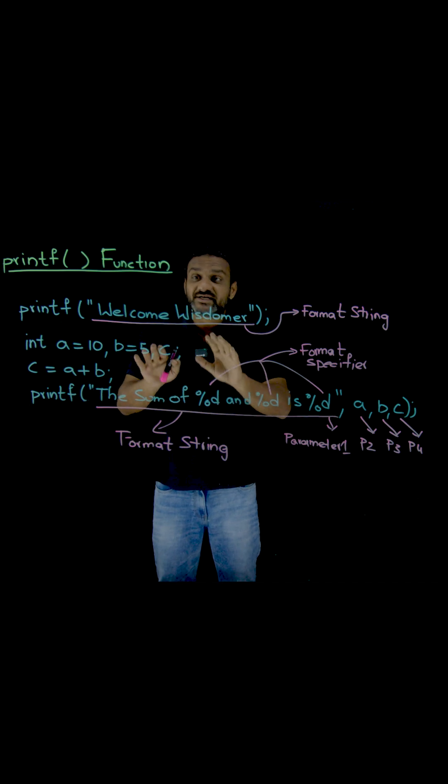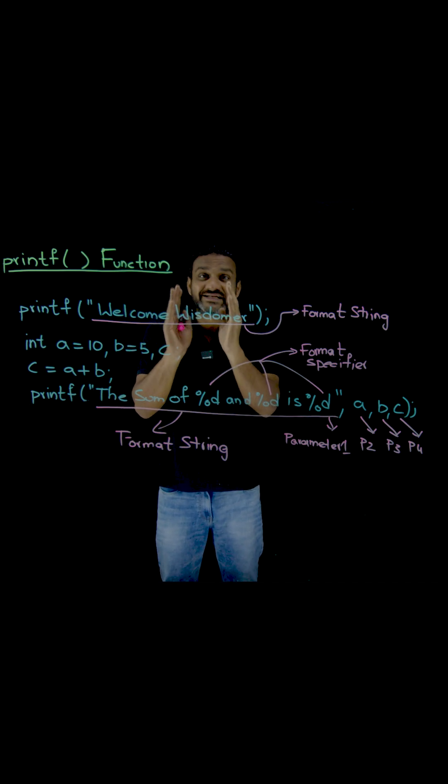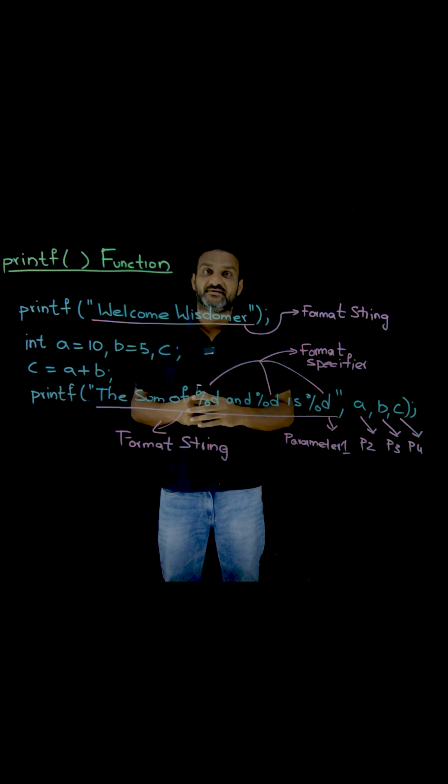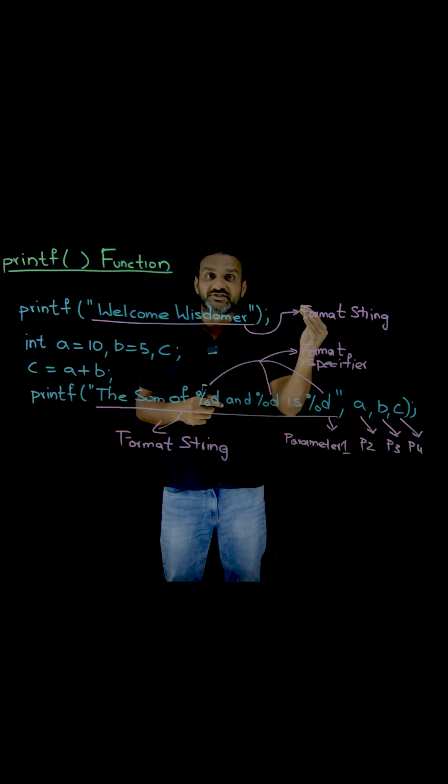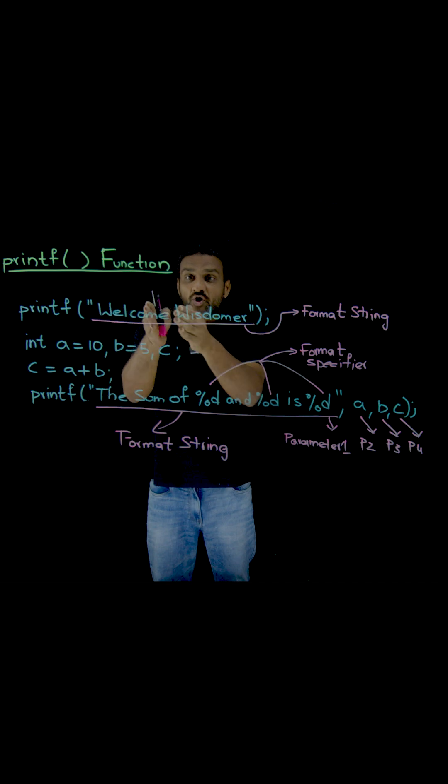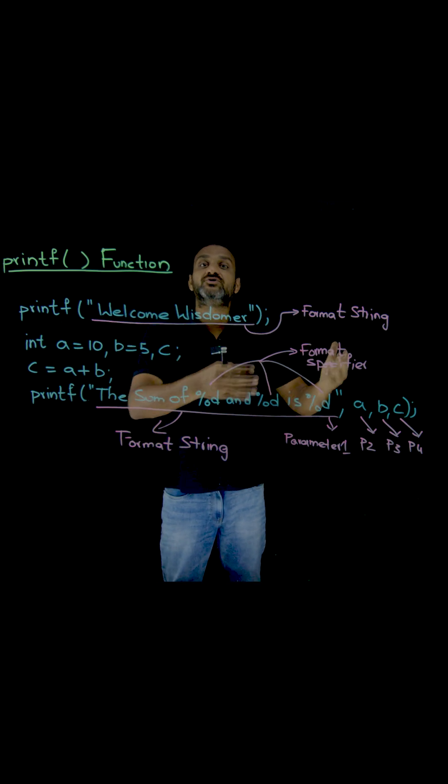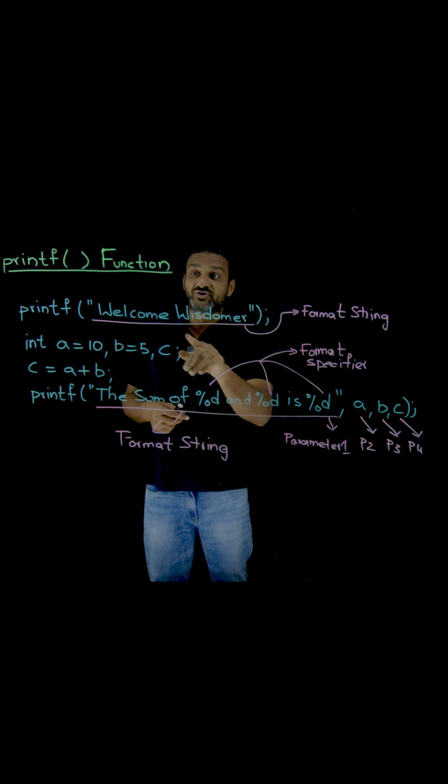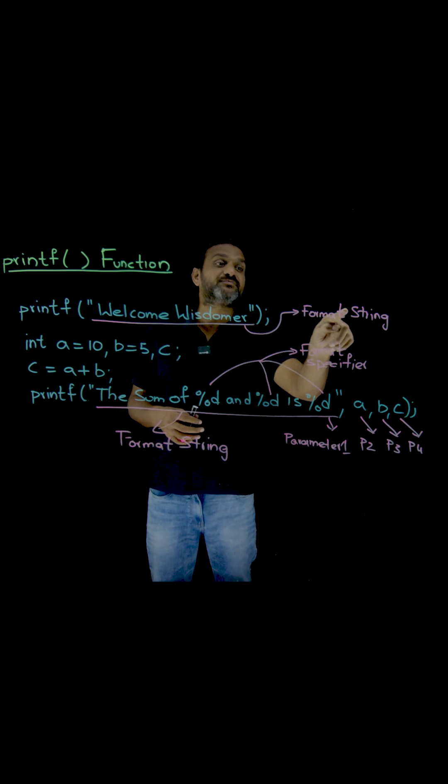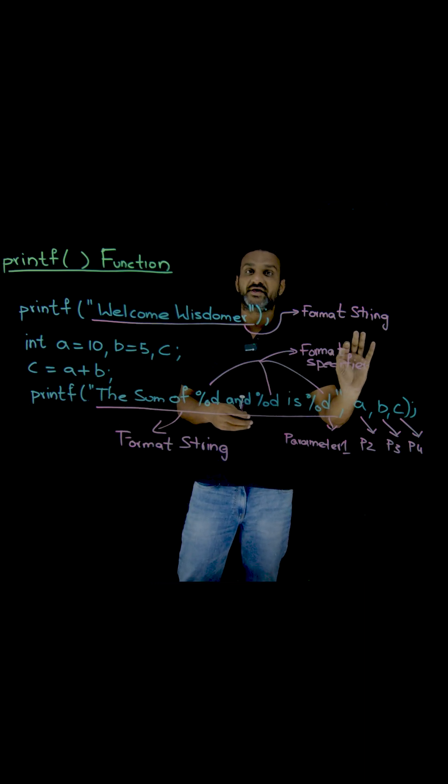Whatever is present in this format string, only that content will get displayed onto the output screen. So just to recap those concepts, whatever is present in these double quotes, only that part will get printed onto the screen. This is what we call a format string.